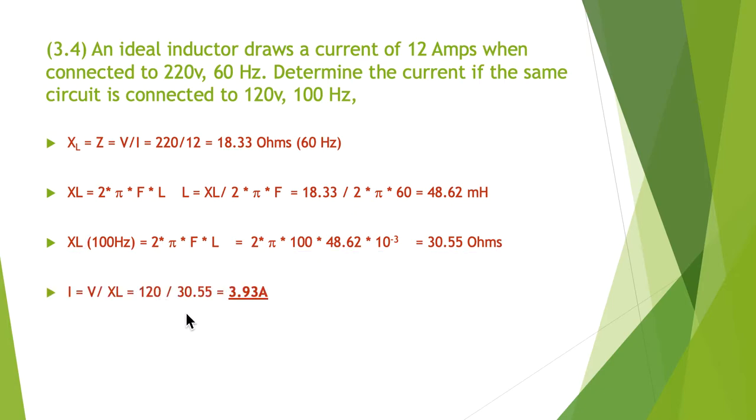Finally we can use a bit of ohms law, so our current equals our voltage divided by XL. We had a new voltage of 120, we've simply put 120 in here, we've taken the 30 ohms and we've put it in here, and we've done the calc and the answer is 3.93 amps. So it draws a lot less current because the frequency has gone up but the voltage has come down. So compared to our original arrangement, voltage went down, frequency went up, so that had a substantial effect on the current.